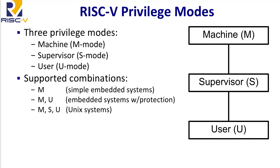As a refresher, in the baseline RISC-V Privileged Architecture there are three privileged modes: machine mode, supervisor, and user mode. Machine mode is the bare metal mode — it's where monitor code runs, or in simple embedded systems it's where all the code runs. User mode is where application code generally runs. If you want to run Unix-like operating systems like Linux or Windows, you also add supervisor mode, which provides page-based virtual memory and the IO and interrupt functionality necessary to host such an OS.